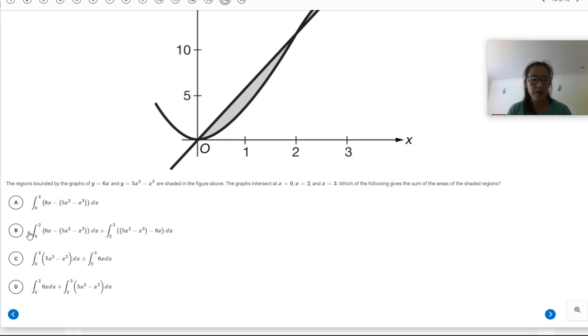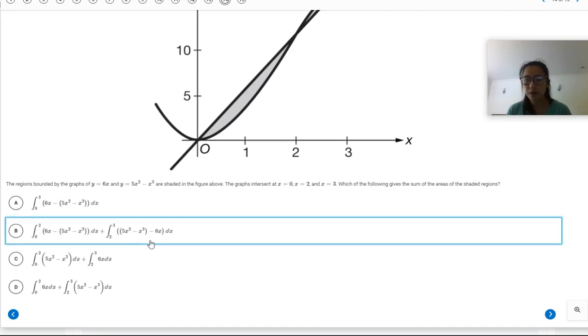In answer choice B, they go from zero to two and they do top minus bottom. So 6x minus 5x squared minus x cubed. And then from two to three, they do the 5x squared minus x cubed and then minus the 6x. So it's got to be B. So this answer choice B is the one that was properly split. And so answer choice B will be your answer.